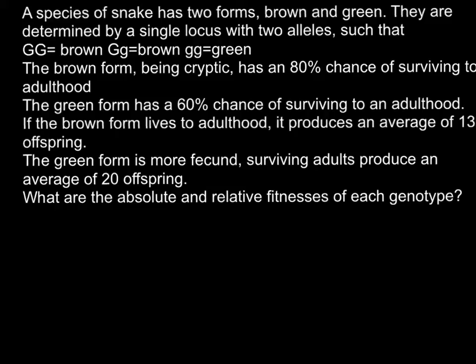If the brown form lives to adulthood, it produces an average of 13 offspring. The green form is more fecund, and surviving adults produce an average of 20 offspring. What are the absolute and relative fitnesses of each genotype?